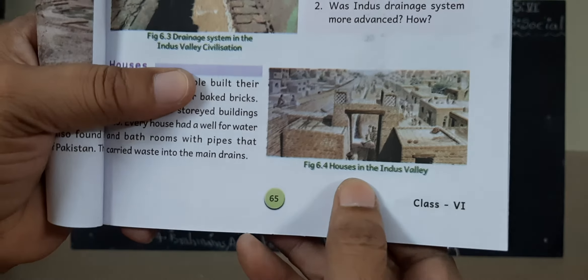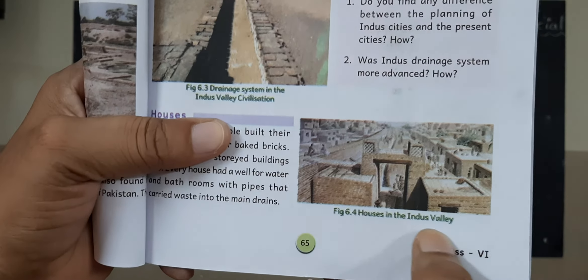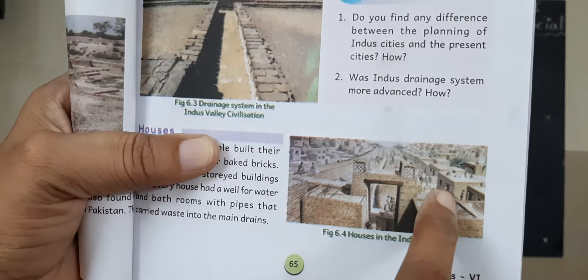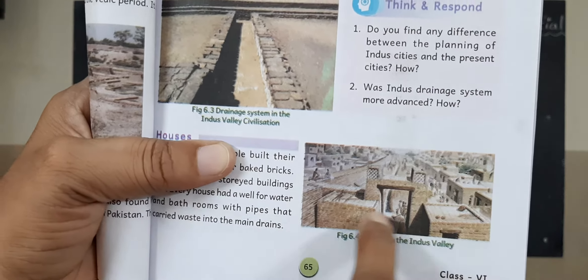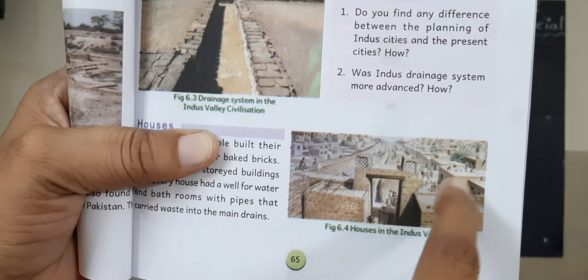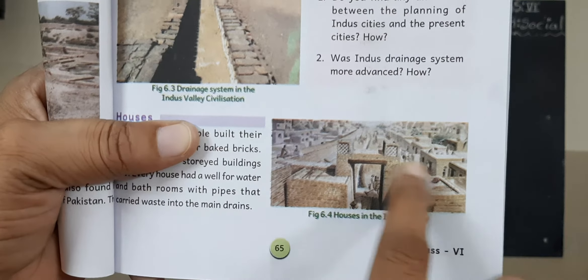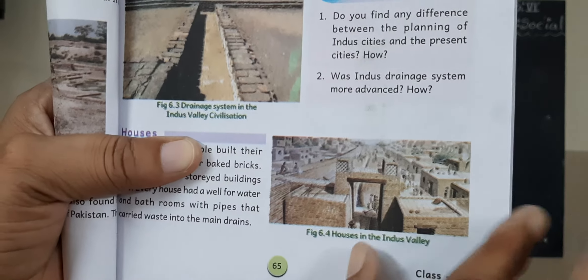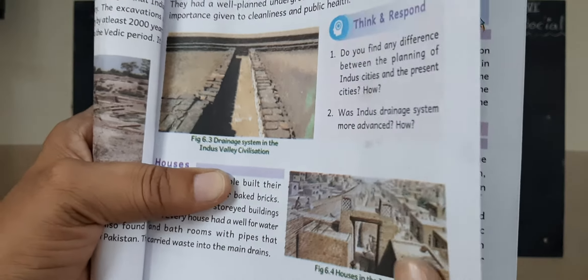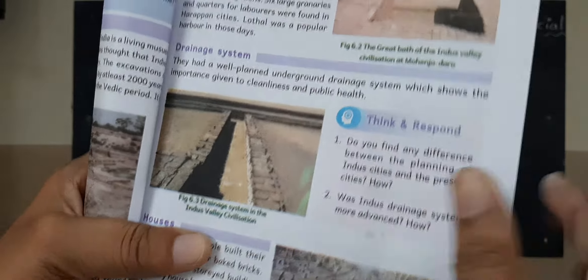Now come to this picture: houses in the Indus Valley. Look — these are all houses. Children, look how neatly they constructed the houses. We can see here and we can understand.